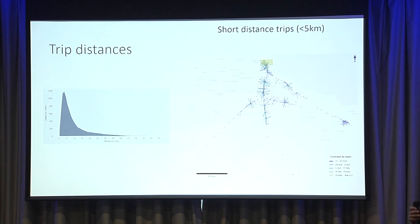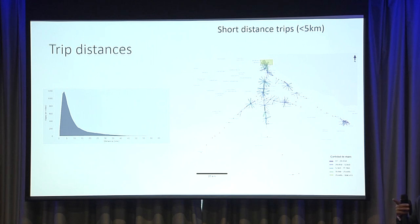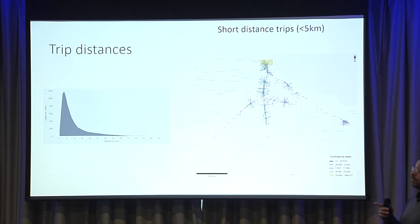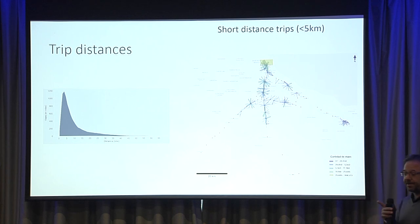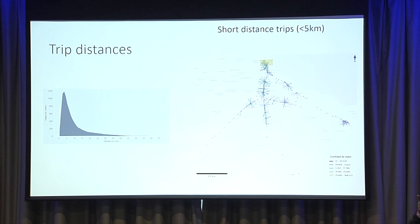The package also creates different indicators commonly used to understand transport, such as the distribution of distances. Basically, we infer the trip chain and know the origin and destination of each trip. We use the OpenStreetMap API to calculate the distances of each trip.